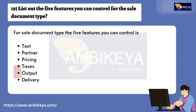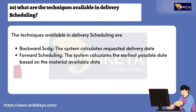Question number nineteen: List the five features you can control for the sale document type. The five features you can control for a sale document type are: Text, Partner, Pricing, Taxes, Output, and Delivery.